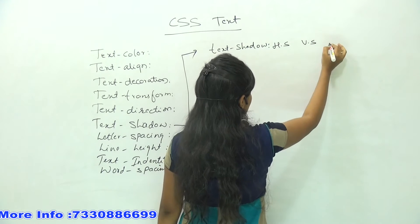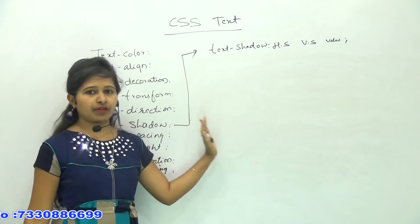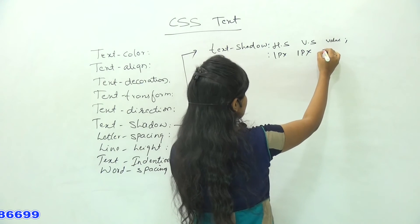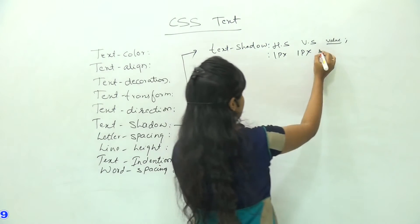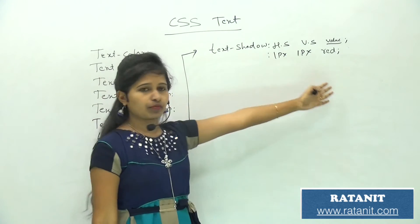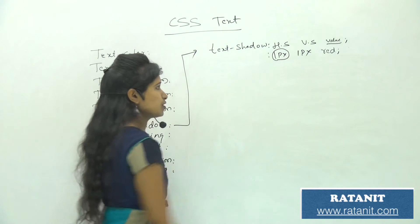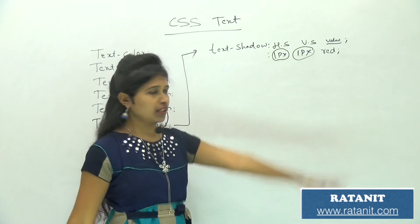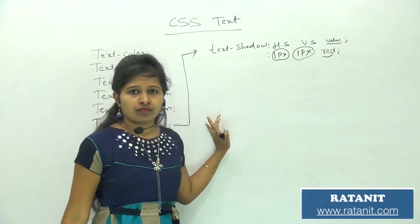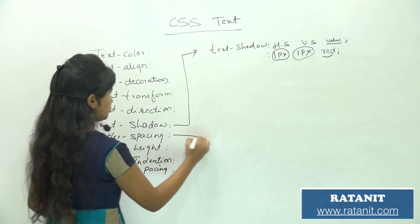For text shadow, horizontal shadow can be 1 pixel, vertical shadow also 1 pixel, and you can optionally specify a color like red. The first value is horizontal shadow, the second is vertical shadow, and color can be given name-wise, hexadecimal, or RGB. Whatever color you give, the shadow will be displayed in that color.